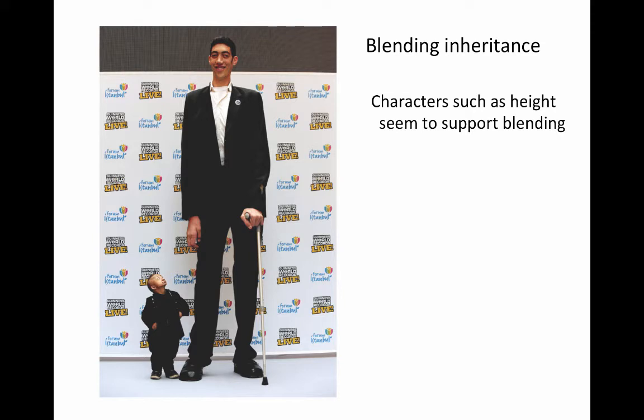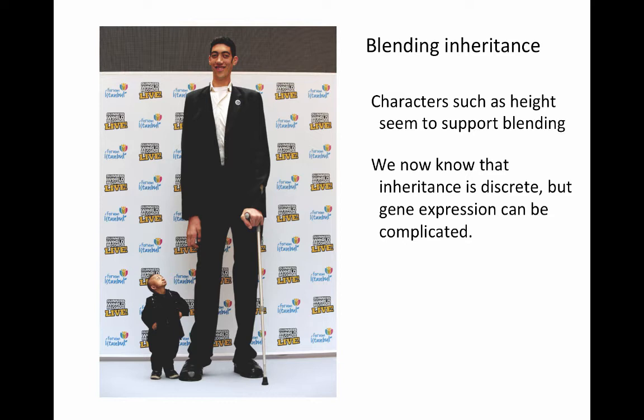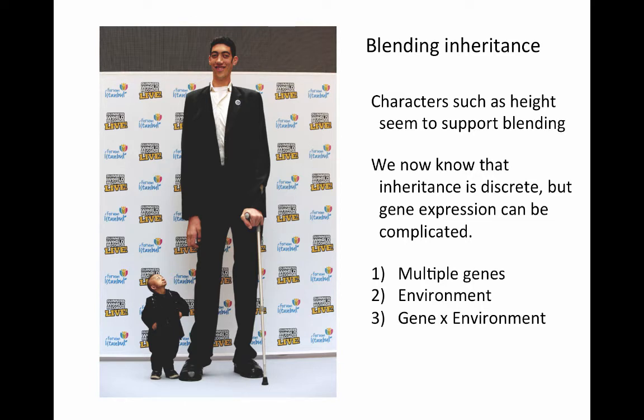But if we look at traits such as height and other continuously varying traits, we can kind of see why that explanation for inheritance might have made sense. We now know that these characters that seem to support blending inheritance — where offspring seem to be an average of their two parents — although inheritance is discrete, gene expression can be extremely complicated, and there can be lots of different factors involved. A single trait can be influenced by multiple genes, and that's usually the case in continuously varying traits such as body height. Environment can have a huge influence — things like nutritional status will have an impact on how tall you grow. And there can also be gene-by-environment interactions, and we'll see more about that as we get into the section on heritability.